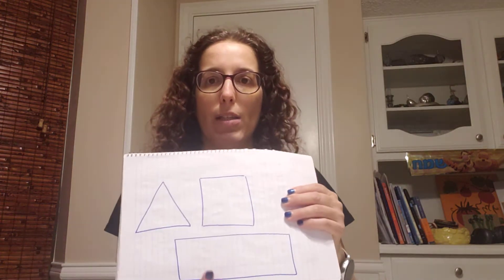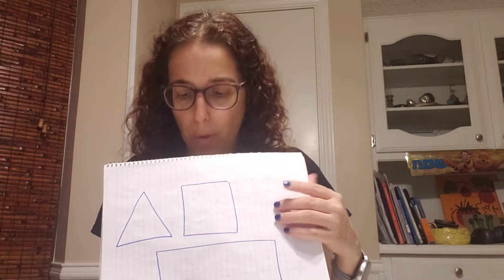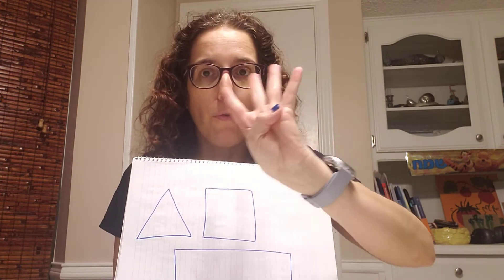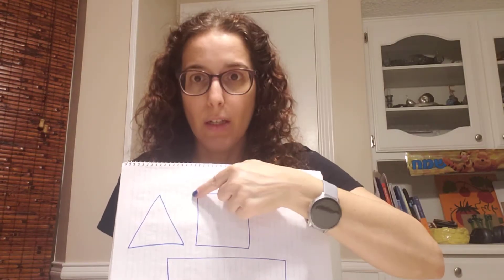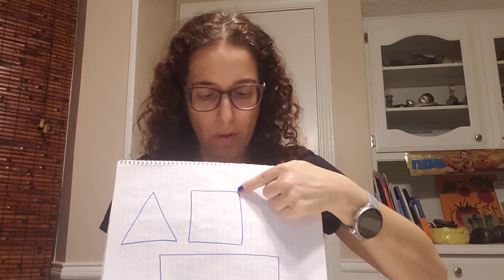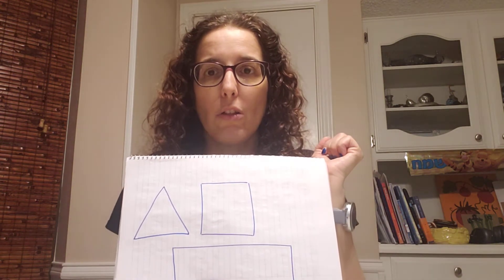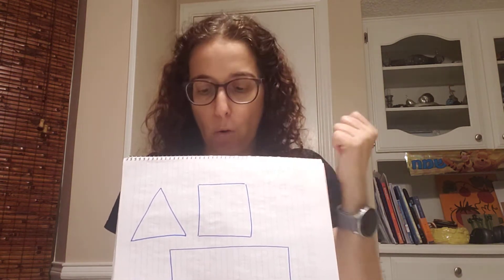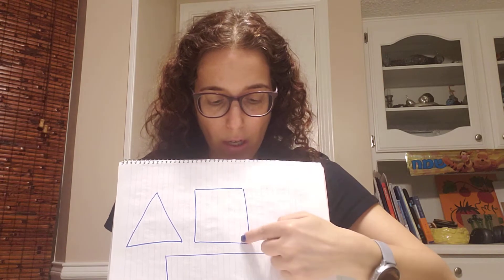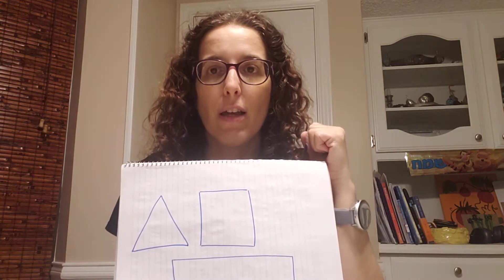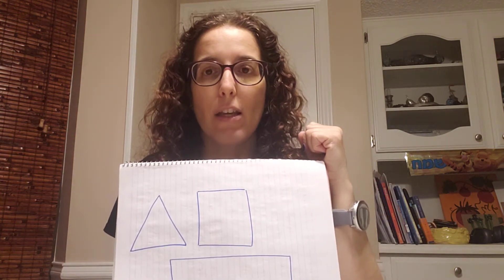Now the second shape we're going to talk about is a square. A square has four sides — one, two, three, four. And if we look at them, all the sides have the same length. That's a square.